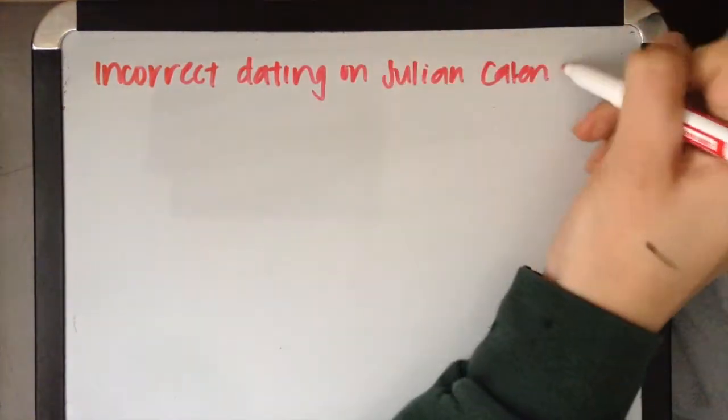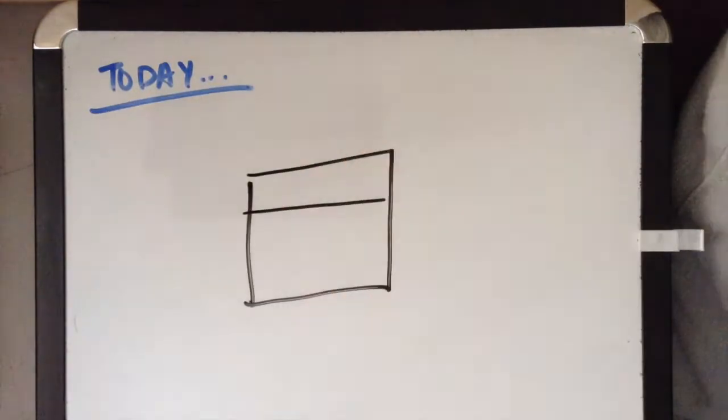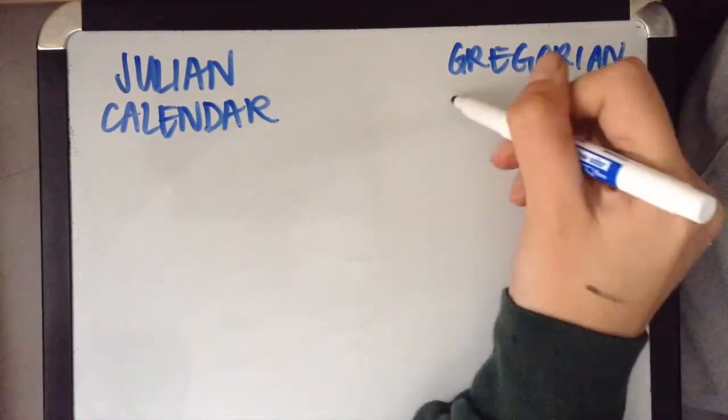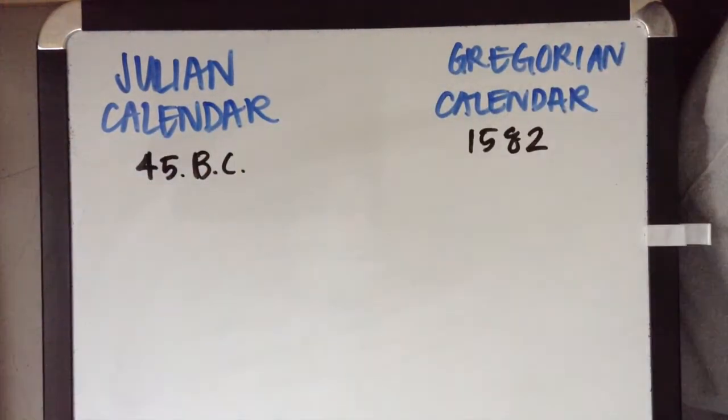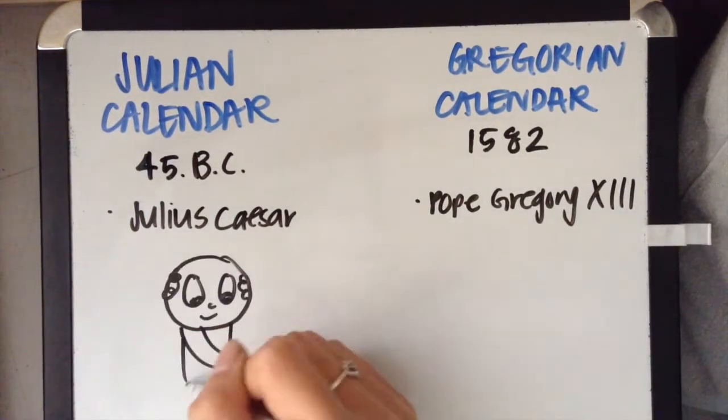The last piece of evidence that supported Ehrling's claims was incorrect dating on the Julian calendar. Today, we live in accordance to the Gregorian calendar. The Julian calendar was founded in 45 BC by Julius Caesar, whereas the Gregorian calendar was founded in 1582 by Pope Gregory XIII.